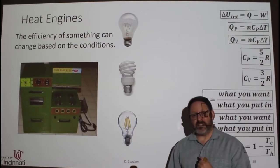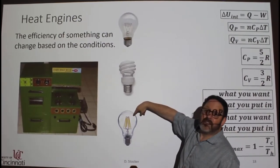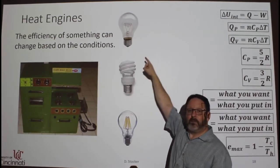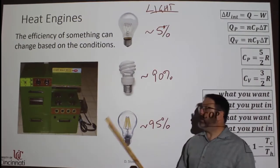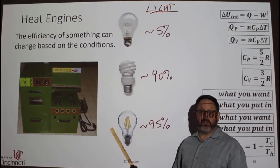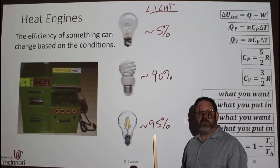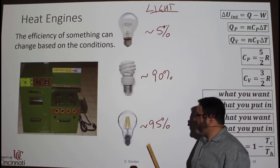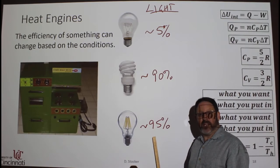If you look at the efficiencies of these for producing light, the most efficient is this one, this one's close behind, and that one is actually terrible at producing light. So if what you want to do with these light bulbs is to produce light, the LED is about 95% efficient. You put in one watt of electrical energy and you will get out 0.95 watts of light energy.